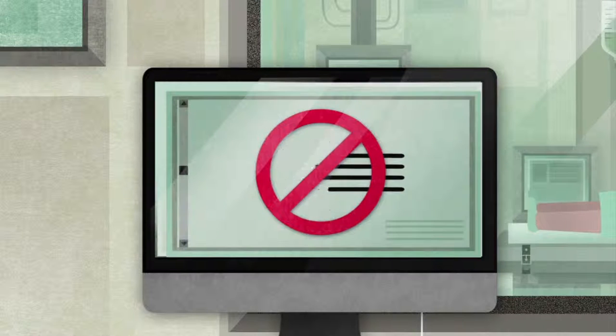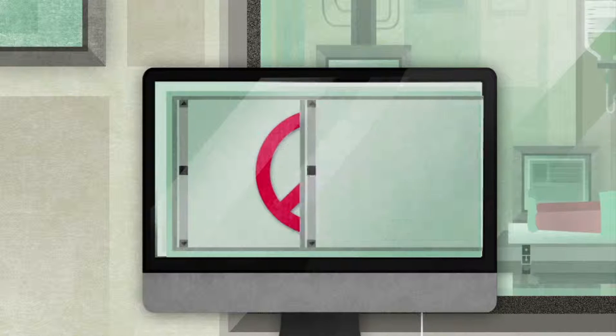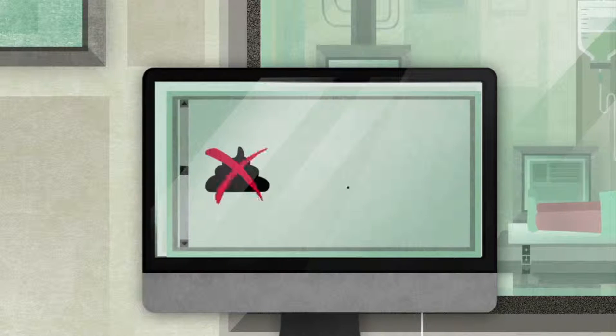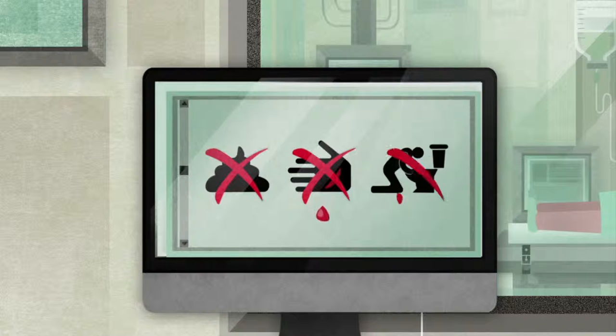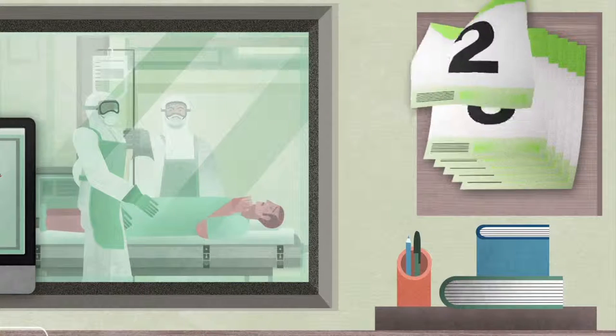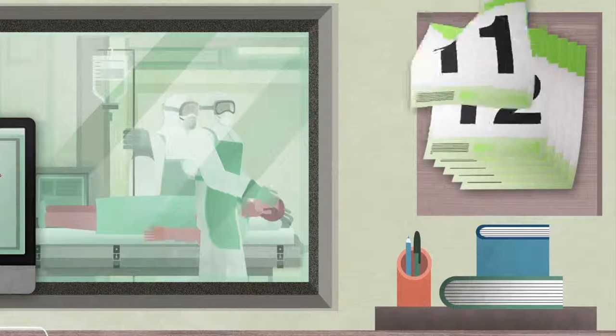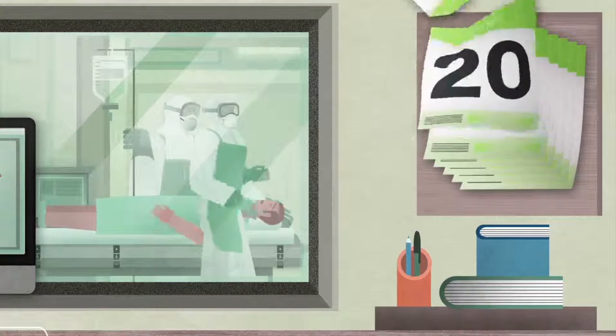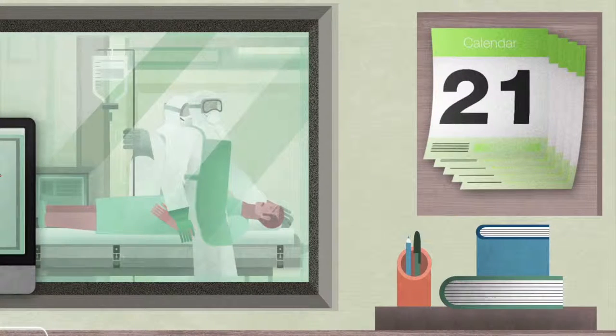The Ebola virus doesn't spread through the air like the flu. You can only get the disease through direct contact with body fluids from an infected person, living or dead. People infected with Ebola virus are contagious only when they have the symptoms. It takes from 2 to 21 days from infection for those symptoms to show.